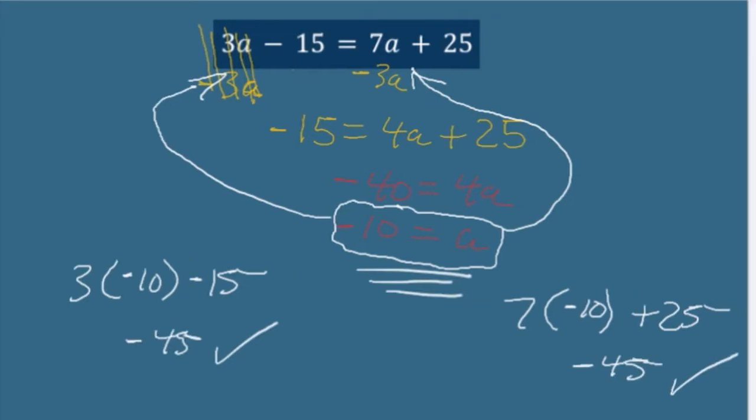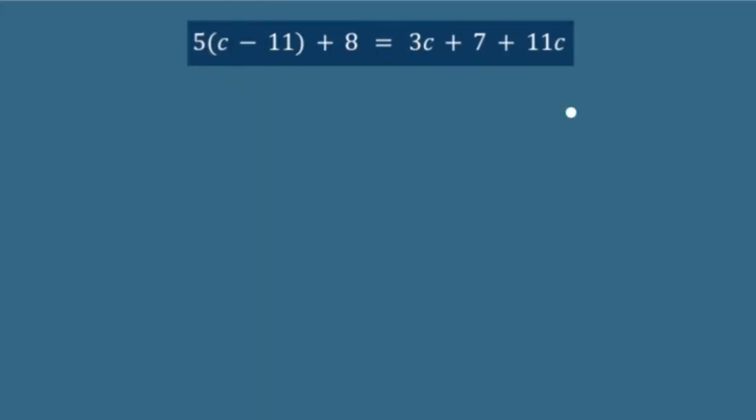What could make this more complicated? The same kind of things you would have to do if there are multi-location equations, variables in multiple spots. You have to be able to distribute to get rid of parentheses. So, stuff like this, five C's minus 55 plus eight, and then also combine like terms, five C's minus 47.